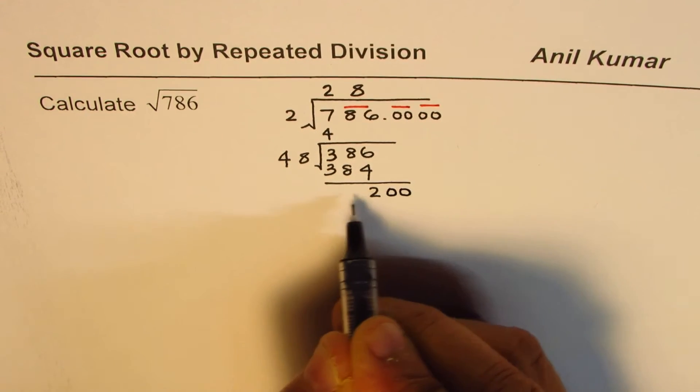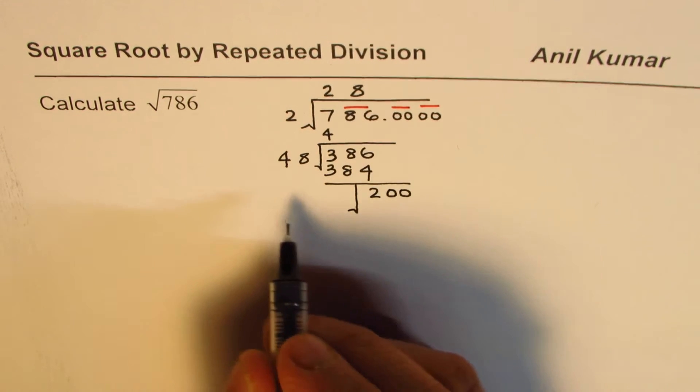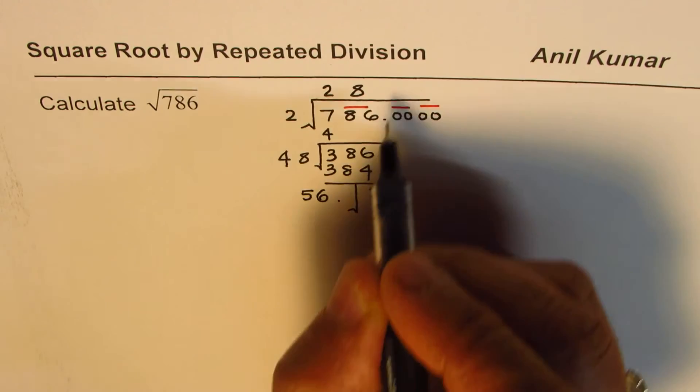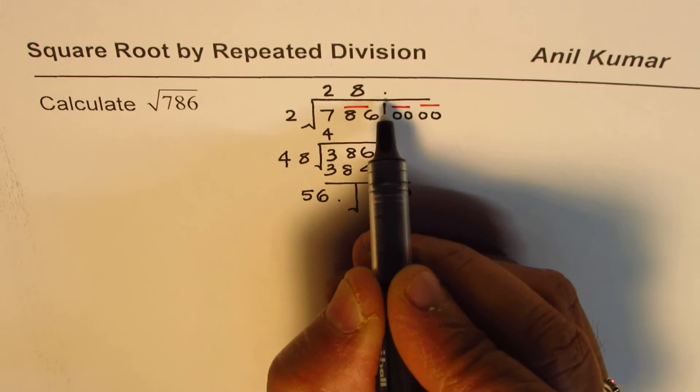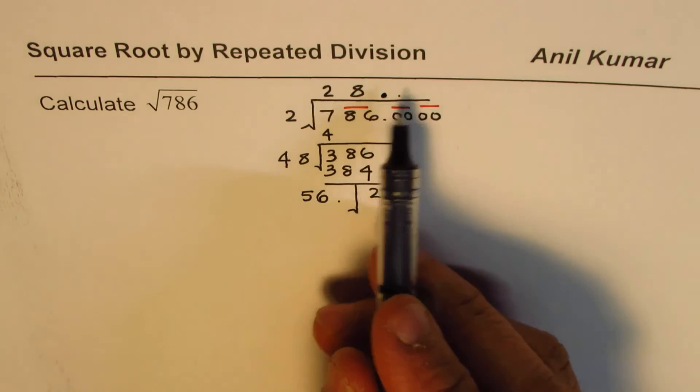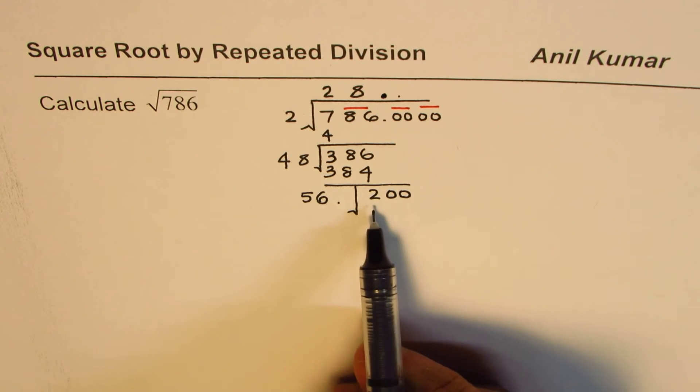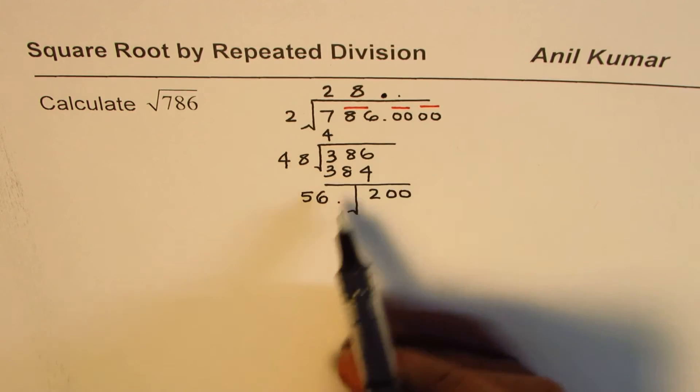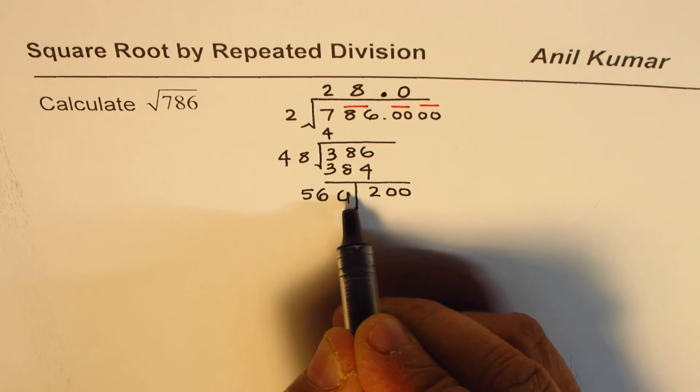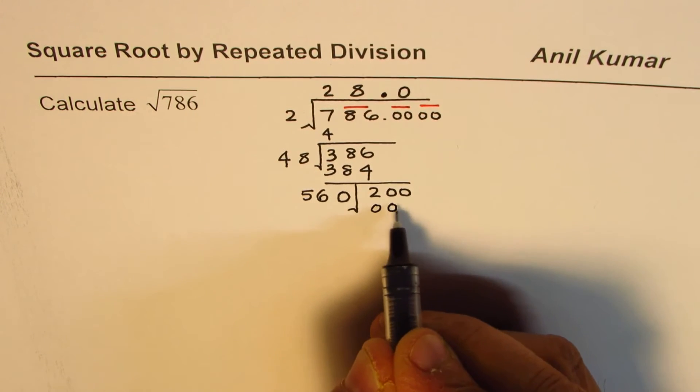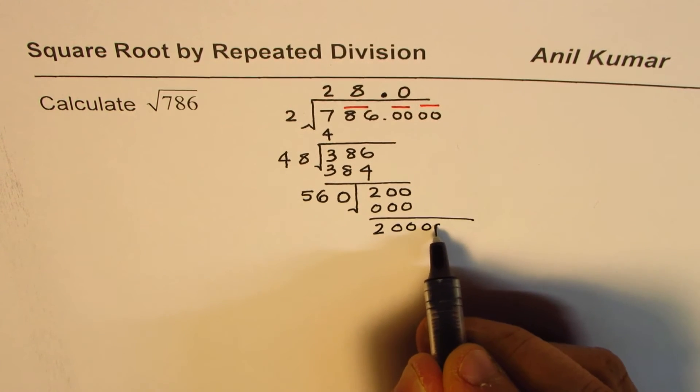Now we need to divide this by twice 28, which is 56. Then we have to look for a number which when placed here. Since I put the numbers after decimal here, I'll make a decimal. Even if I write 1 here, I get 561, which is greater than 200. So we cannot even take 1. The only number which we could try is 0. When you multiply by 0, you get 0, 0, 0. When you take away 0 from 200 you get 200, and bring down 2 numbers which are zeros.